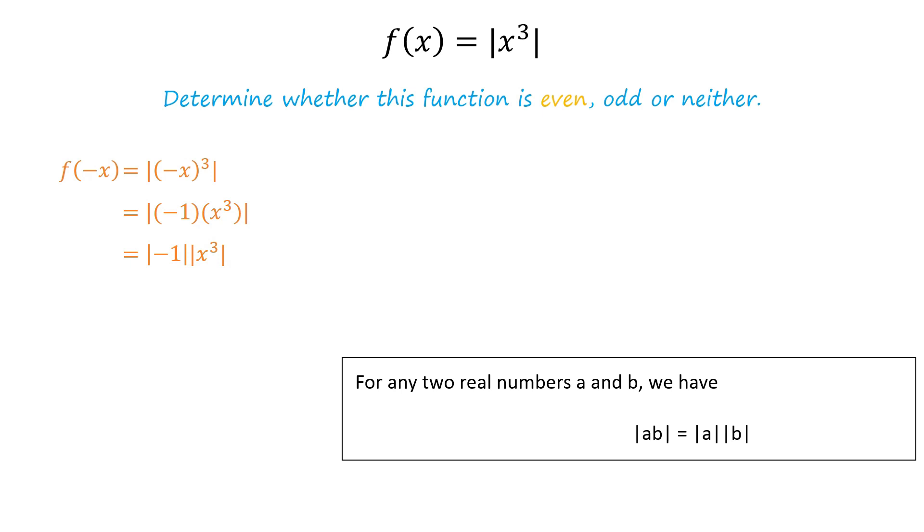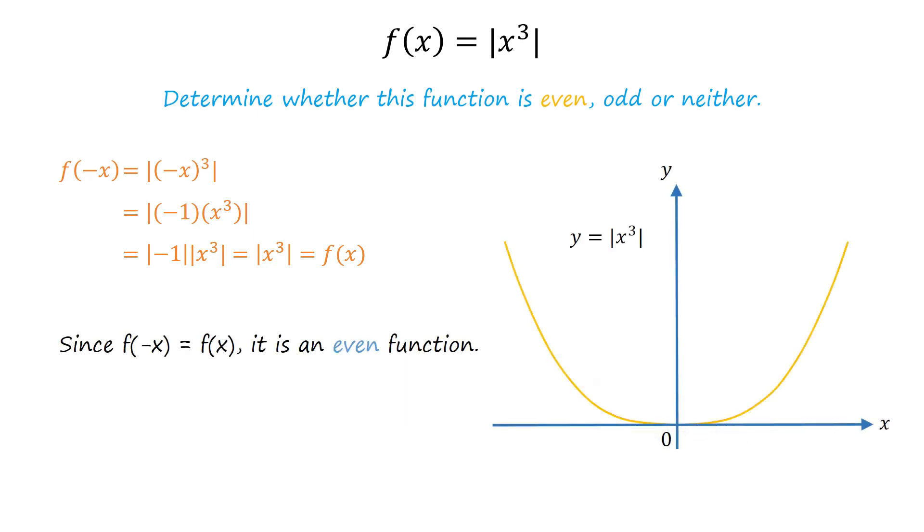Since modulus of negative 1 equals 1, f of negative x equals modulus of x cube, which equals f of x. Since f of negative x equals f of x, the given function is even. It can be seen that the graph of this function is symmetric about the y-axis.